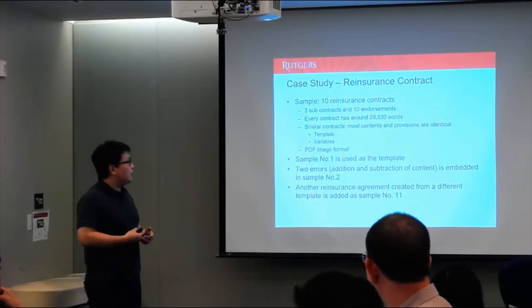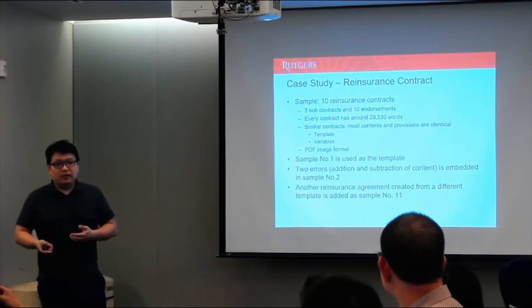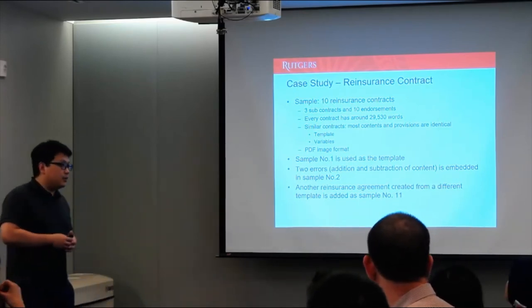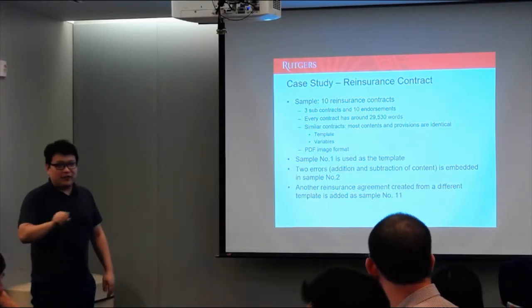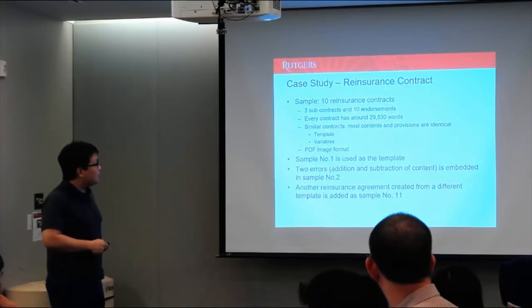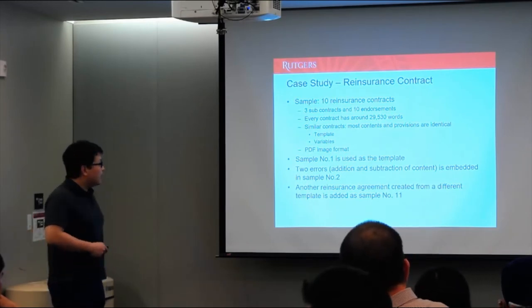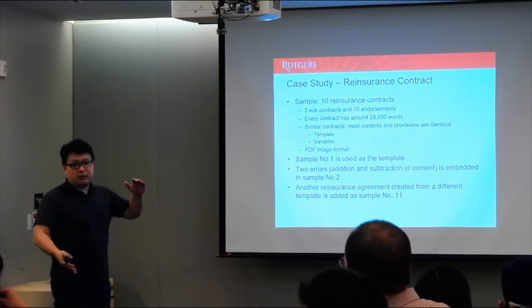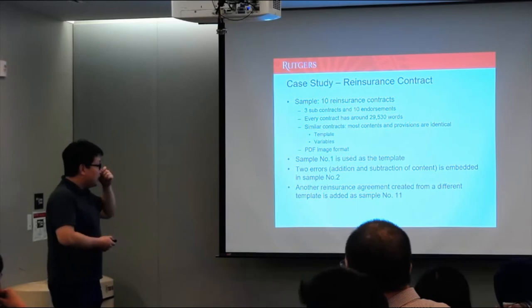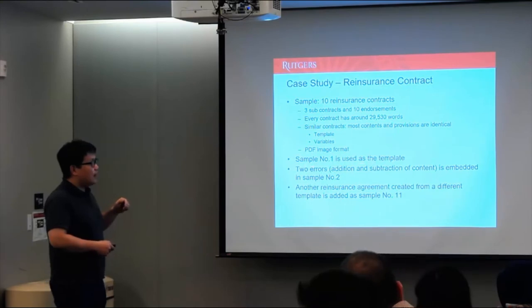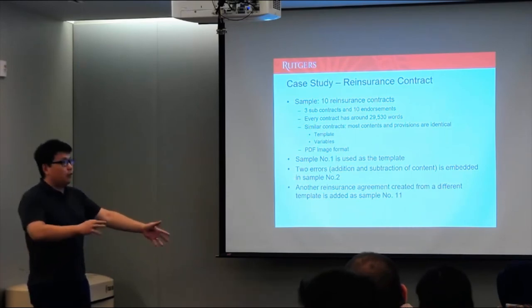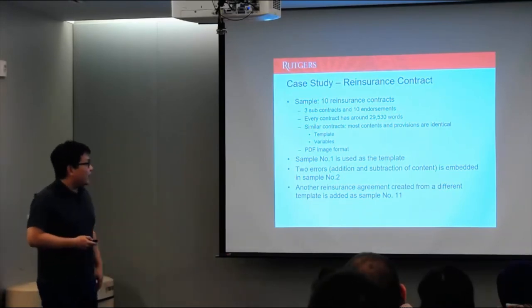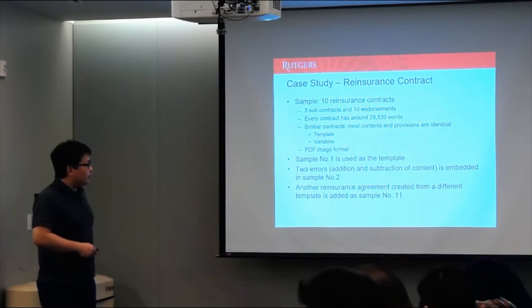So I apply this framework using some sample data from one of the big four audit firms. They have a client in the reinsurance industry, and I only got 10 because it's really hard to ask contracts from the company. And they need to cross out all the sensitive information with their legal department. Although we only have 10, each contract has around 30,000 words, which is long contracts. And they are created with template and also variable, meaning they are created from template, feeding all the records in there. So to showcase how the framework works, I use number one as the template. Usually in the case, you would just receive a template. But here, we don't have that, so we treat number one as a template. And also manually embedded two errors in number two, so we take one paragraph on one page, put that on another page, just to see if we can identify that. And also add another reinsurance agreement created from a different template, but from the same client.